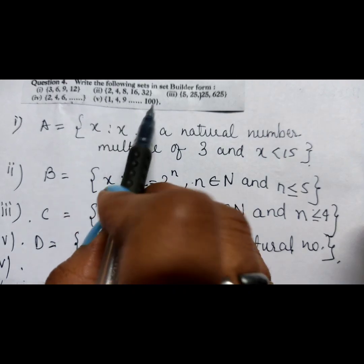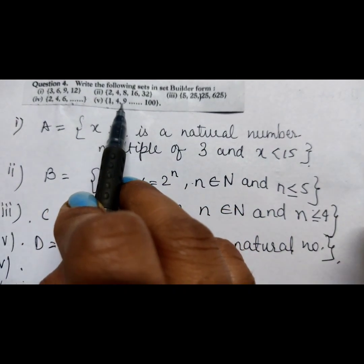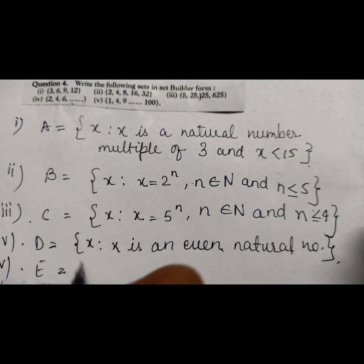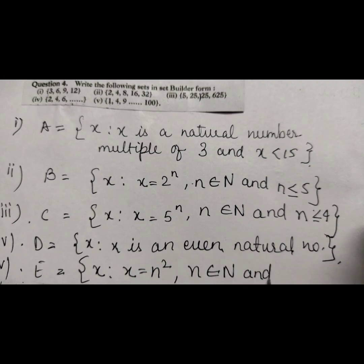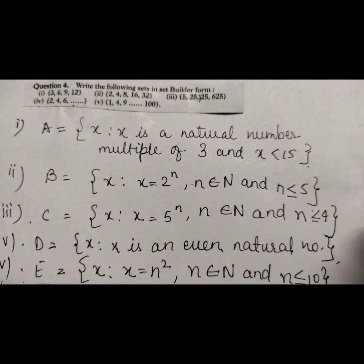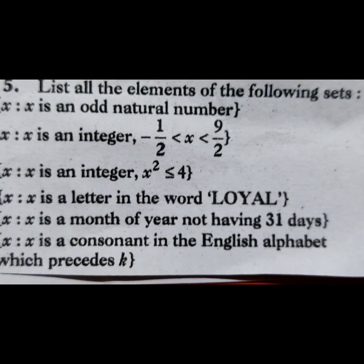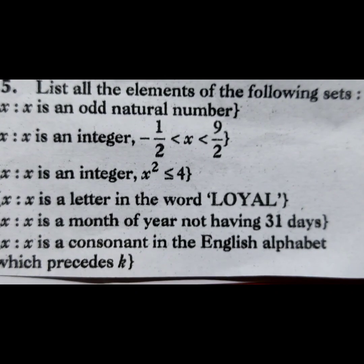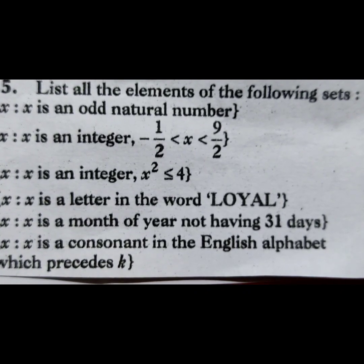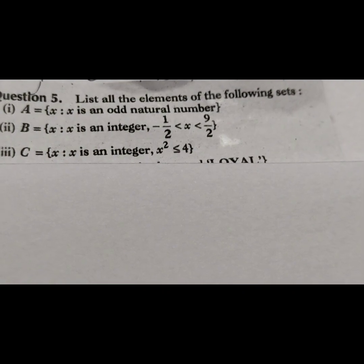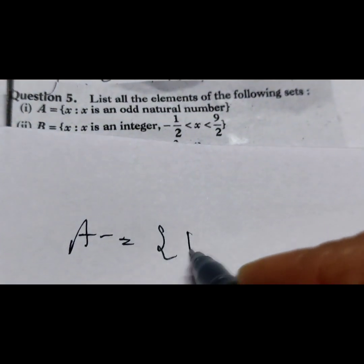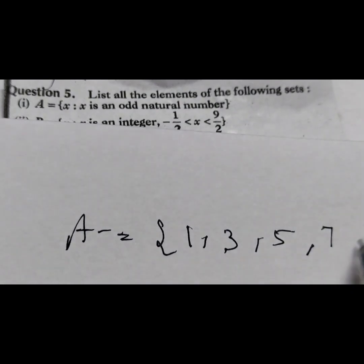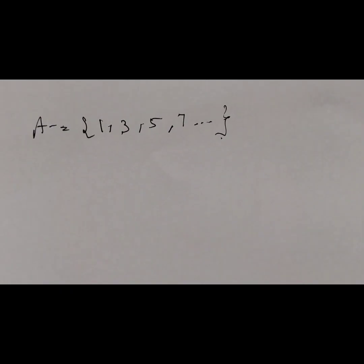Question 5: list all elements of the following sets. First: x is an odd natural number — so 1, 3, 5, 7, 9, ... The second one: x is an integer and -1/2 < x < 9/2. Think of it like a number line: -1/2 is -0.5 and 9/2 is 4.5, so the integers in between are 0, 1, 2, 3, 4.